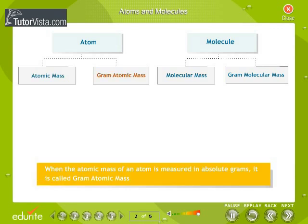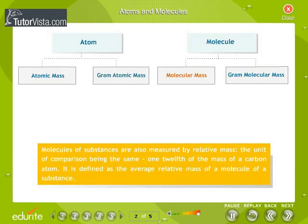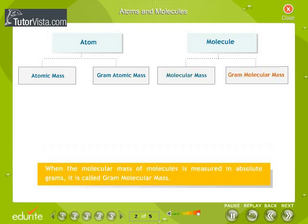When the atomic mass of an atom is measured in absolute grams, it is called gram atomic mass. Molecules of substances are also measured by relative mass, the unit of comparison being the same, one twelfth of the mass of a carbon atom. It is defined as the average relative mass of a molecule of a substance. When the molecular mass of molecules is measured in absolute grams, it is called gram molecular mass.